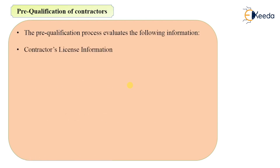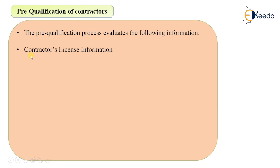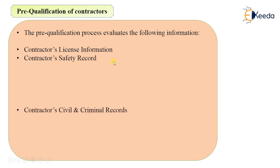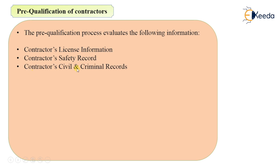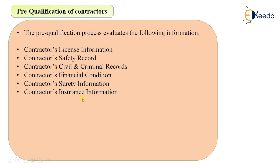The pre-qualification process evaluates the following information: contractor's license information — whether that particular contractor is licensed before giving him the work; contractor's safety record; contractor's civil and criminal records — whether criminal cases are going on against him or not; contractor's financial conditions — whether he will be financially stable if the work is given to him; contractor's surety information; contractor's insurance information — whether he has insurance and whether his staff has been insured; and contractor's project experiences — how much experience he has and what type of projects he has completed.